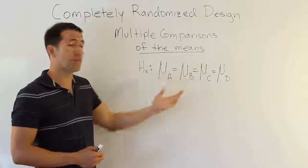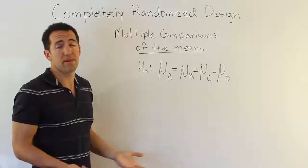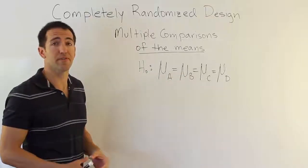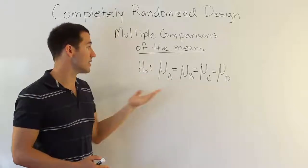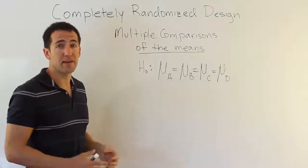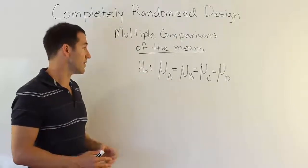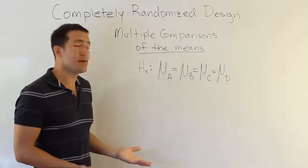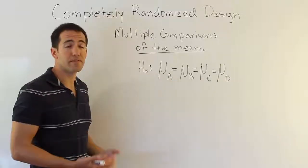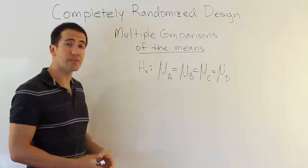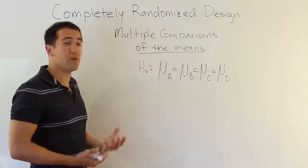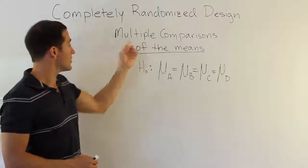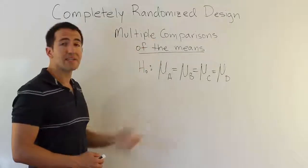If we don't reject H0, then we're saying they're all the same and we don't have to ask which ones are different — none of them are. If you don't reject H0, you're basically saying you believe they're all the same, so there's no sense in trying to find a difference between them. But if you know that at least one of them is different from another, then it's natural to ask which ones.